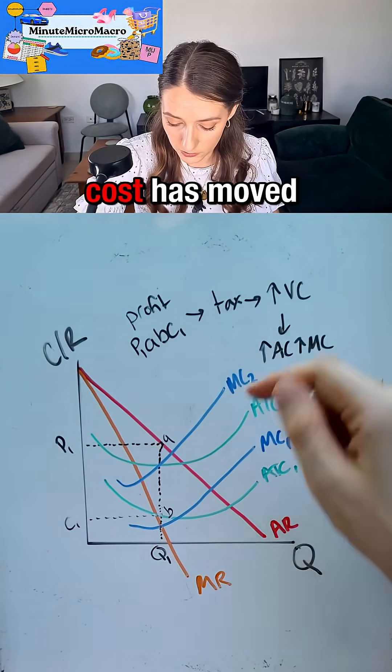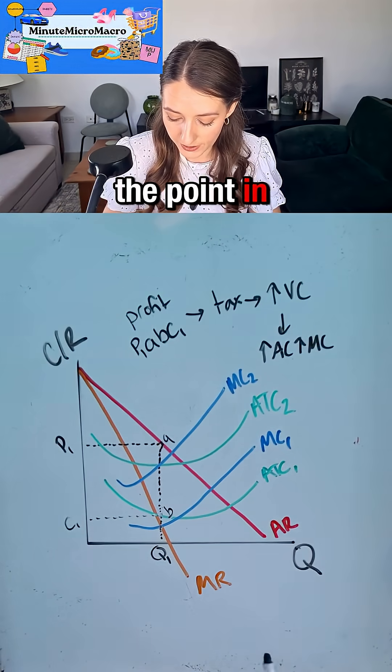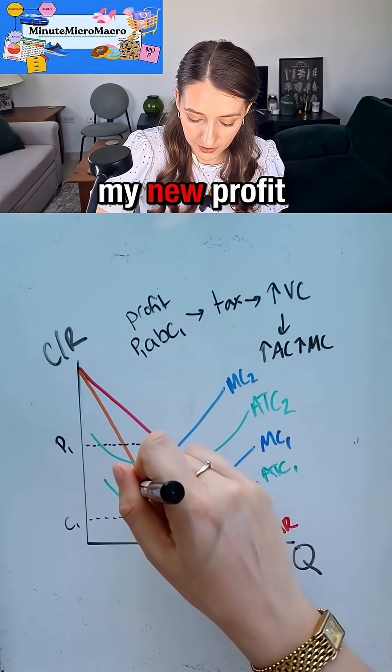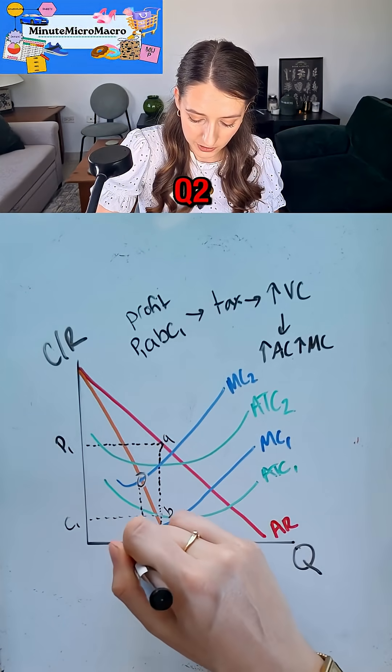Now because marginal cost has moved, it means that the point in which my MC and my MR intersect will have changed. This is now going to set my new profit maximizing quantity Q2.